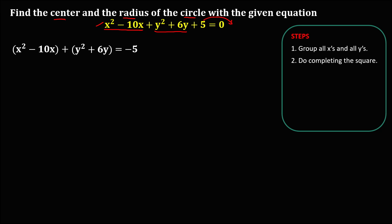Now we can do completing the square. For x, take this coefficient — ignore the sign, so we have 10. Divide this number by 2, and take the square. So 10 divided by 2 is 5, and 5 to the power 2 gives us 25.